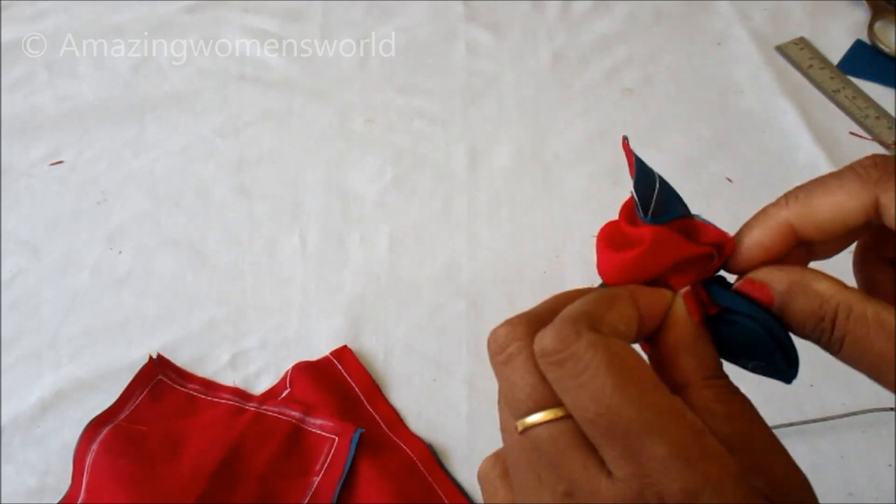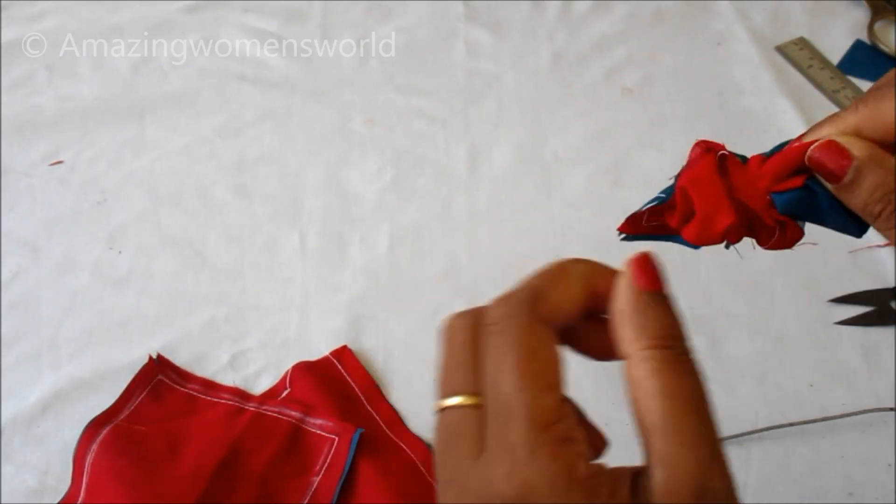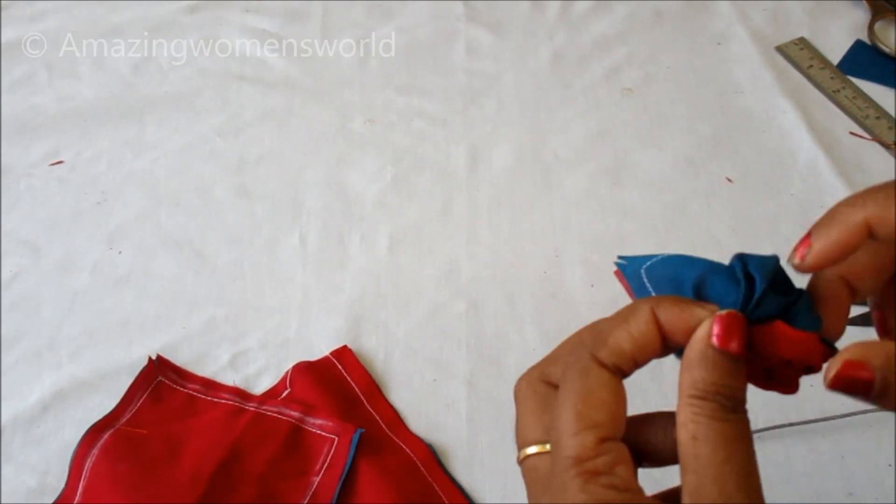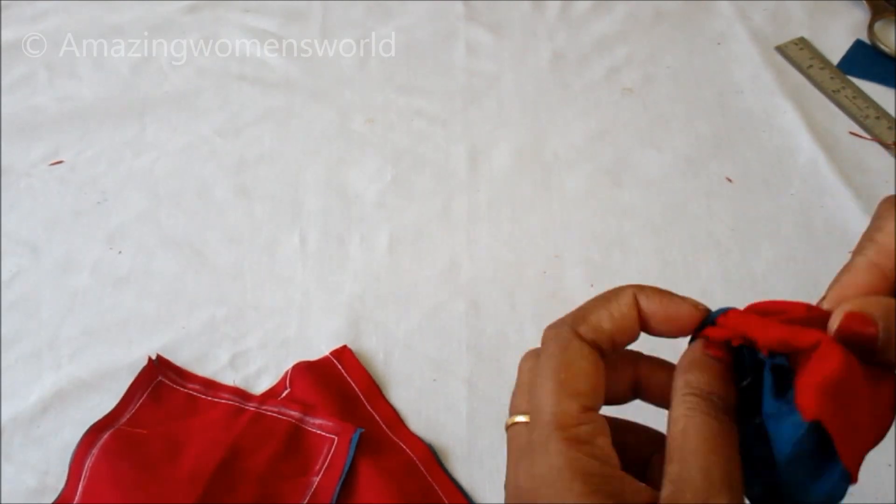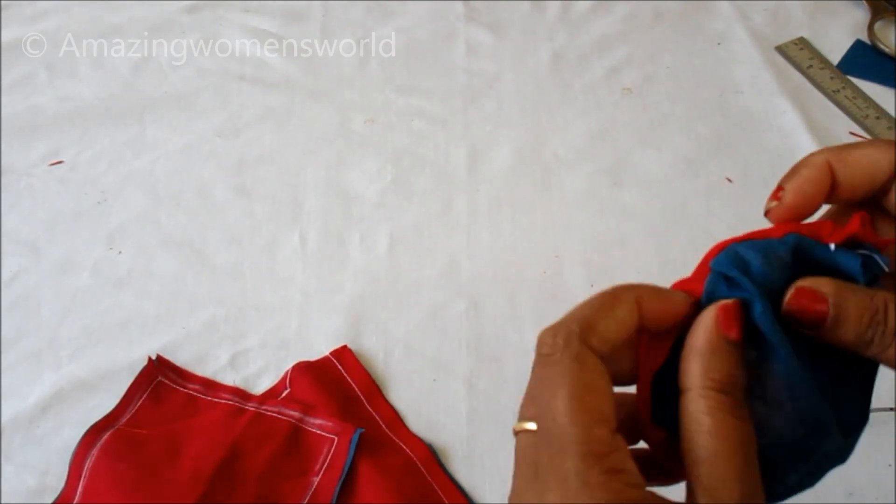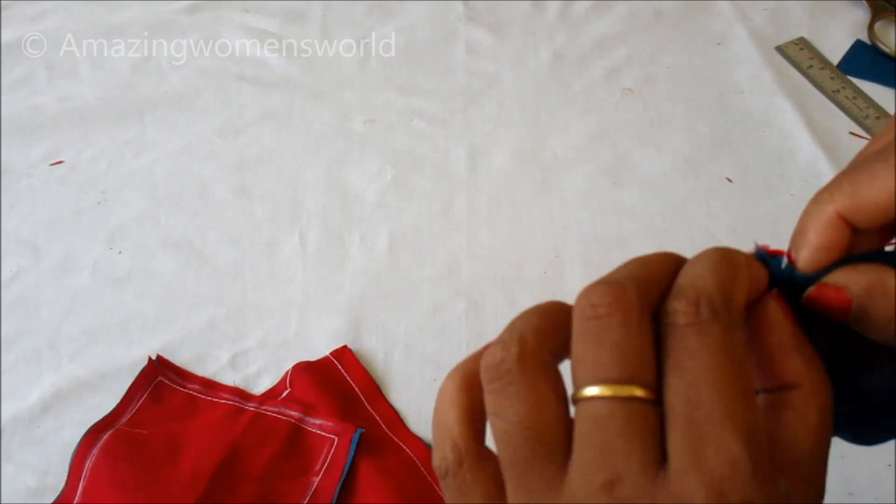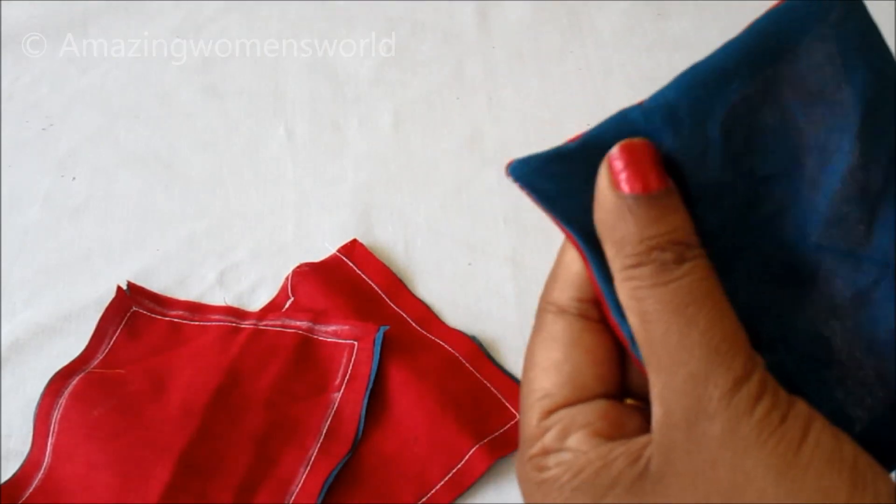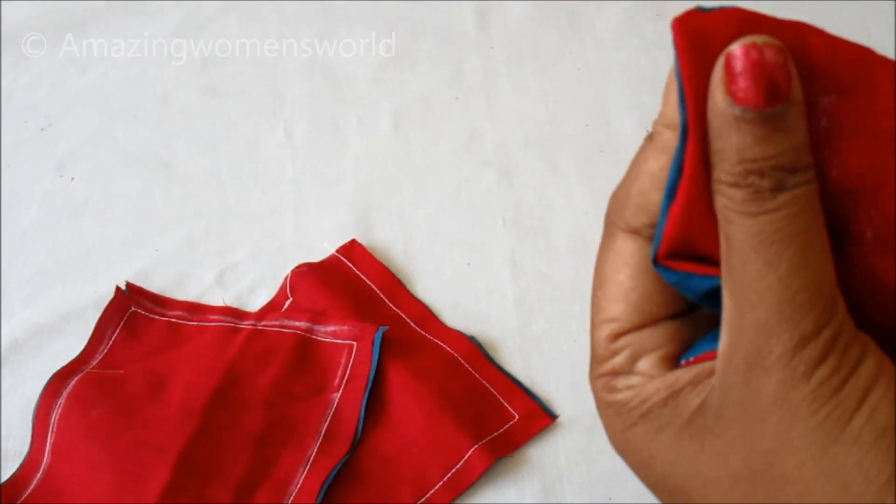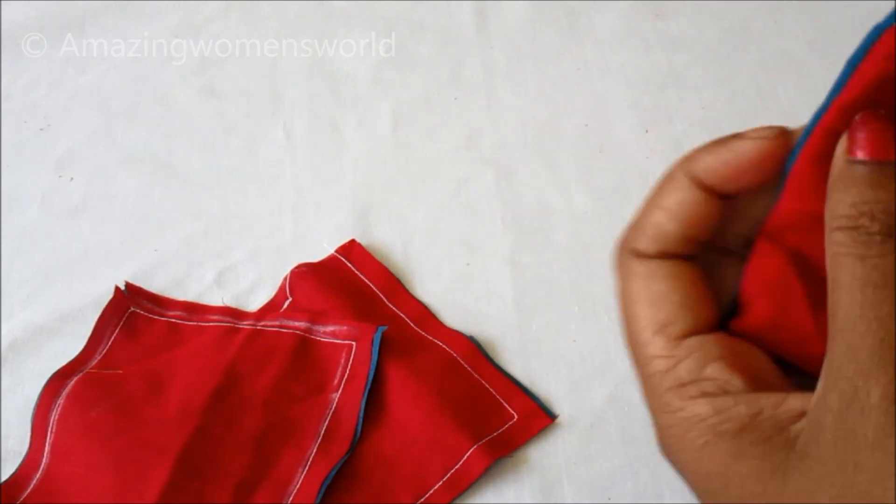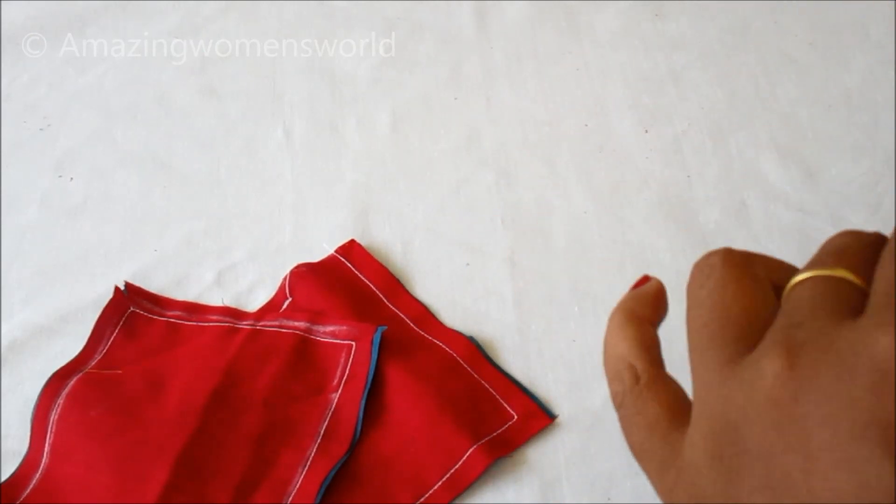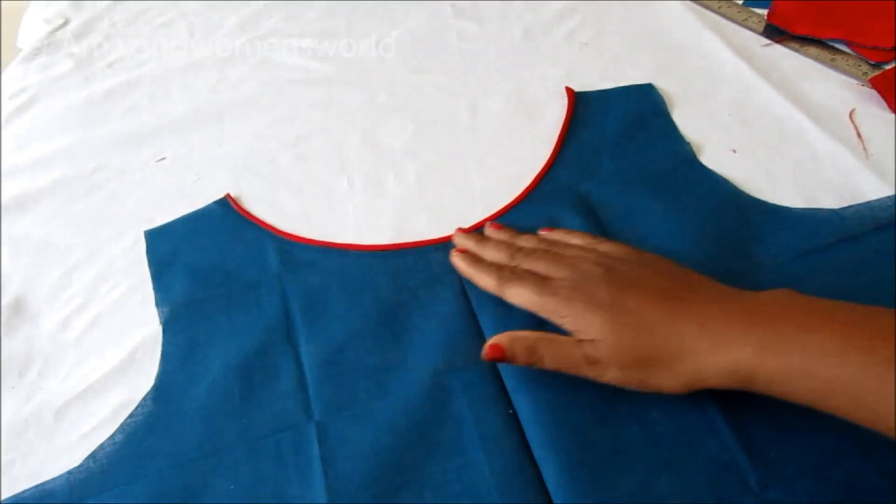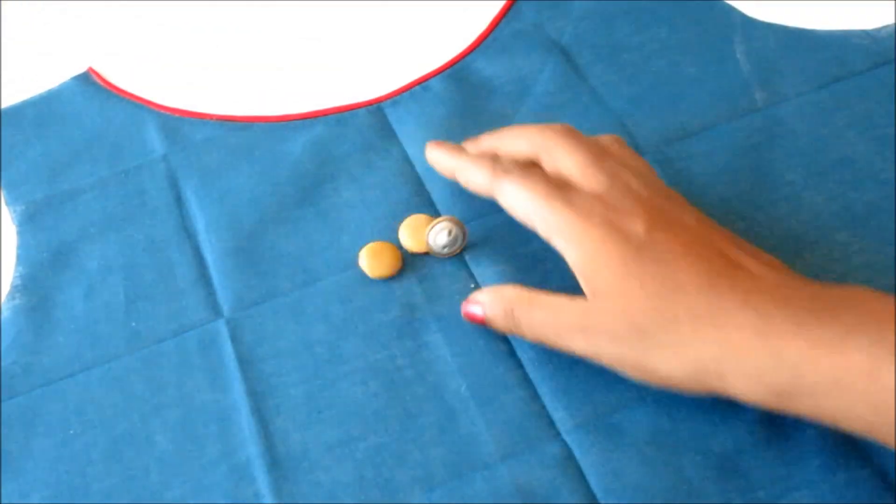Slowly turn inside out using any tool like toothpick or the cycle spoke. Ensure that the corners have turned pretty well. I'm done with the neckline. This is the boat neck. I will show you how to join the patches.